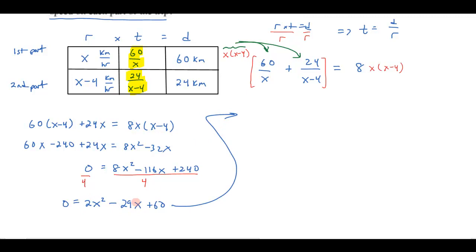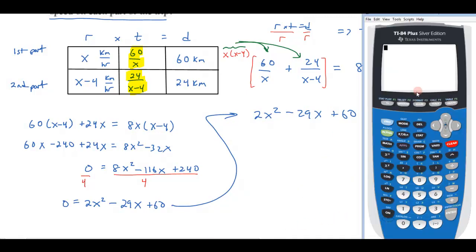And then I can solve this. I want to be able to figure out what x is, and you might try factoring that. I don't know if that factors or not, but what I can do is I can go to my graphing calculator here, and I can use my quadratic formula that I have programmed into my calculator to see what the solutions are. So I'm going to plug in a equals 2, b equals negative 29, and c equals 60.